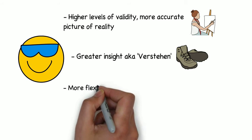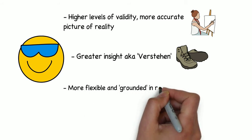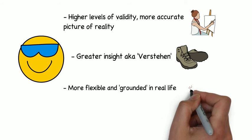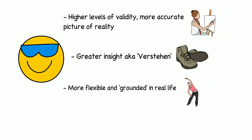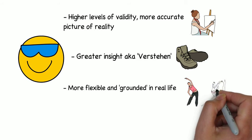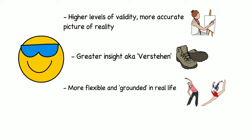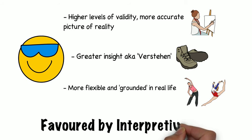Finally, observations are flexible. Rather than starting a study with a fixed hypothesis, a researcher enters a group with an open mind and new experiences can lead to a change of focus. This links heavily to grounded theory, as the theories that researchers produce are grounded in real life. As a result of these perceived advantages, participant observations are favoured by interpretivists as they provide the most valid picture of reality and focus on the individual.